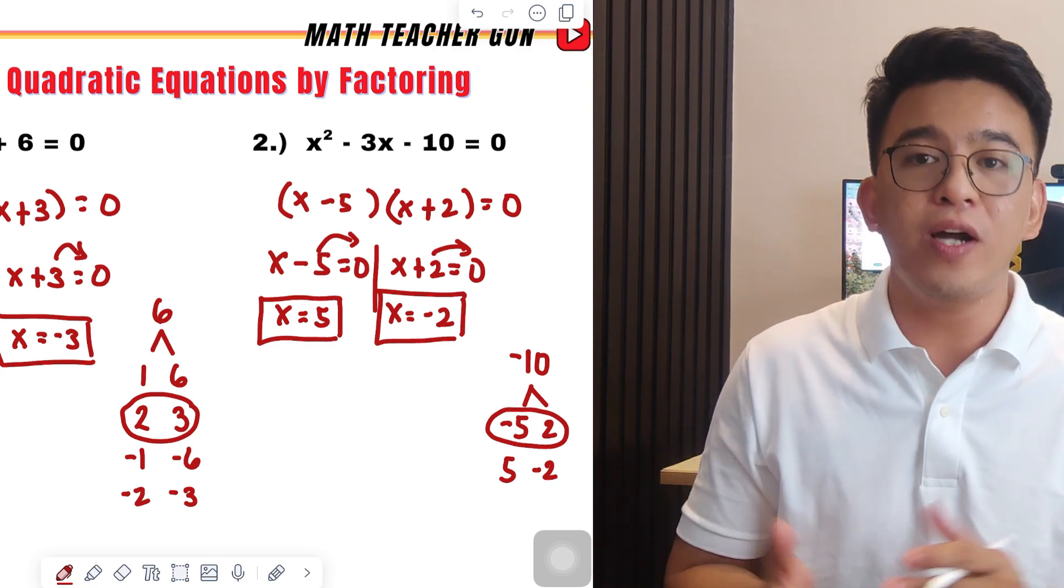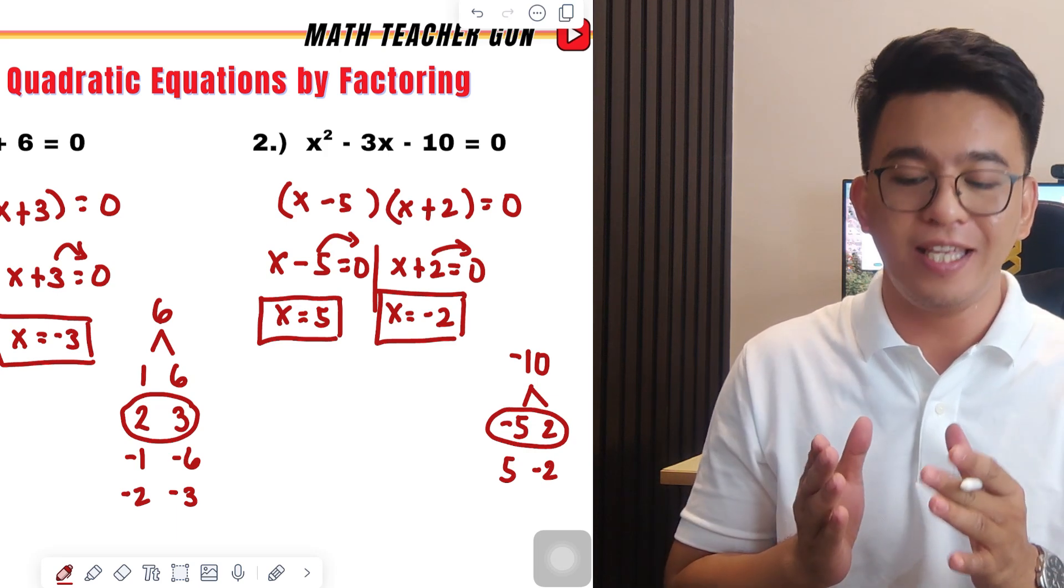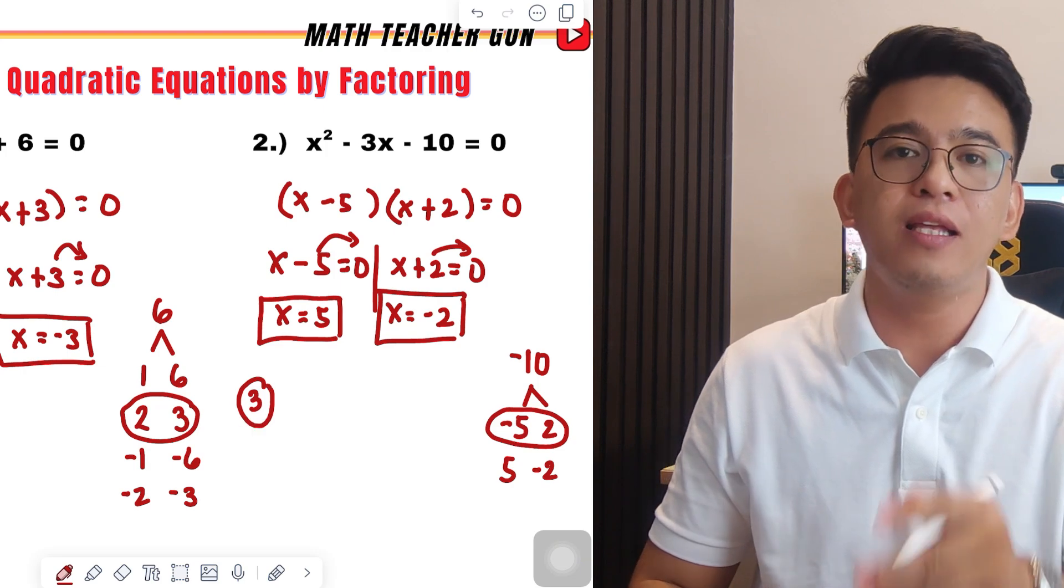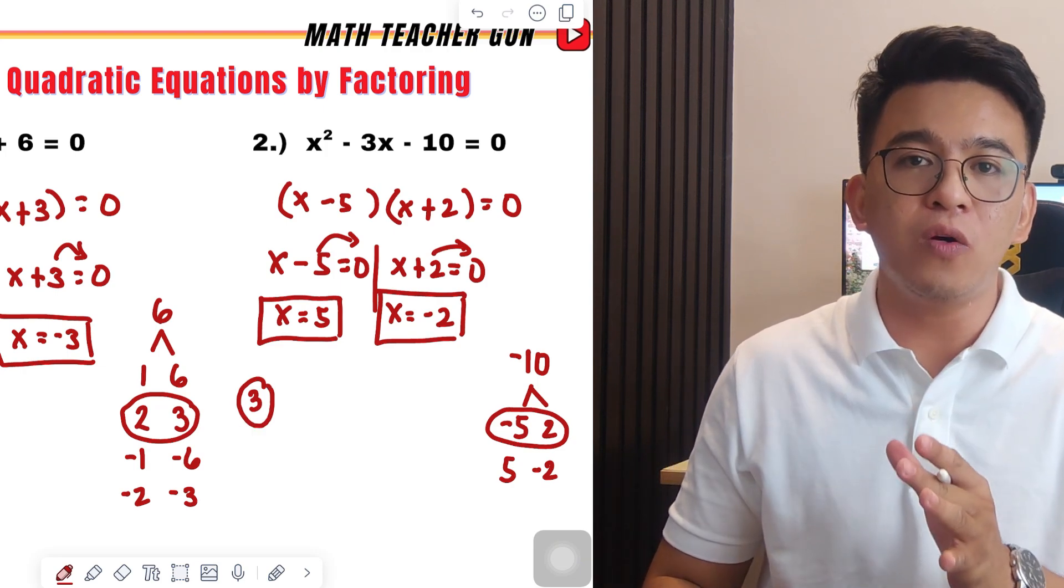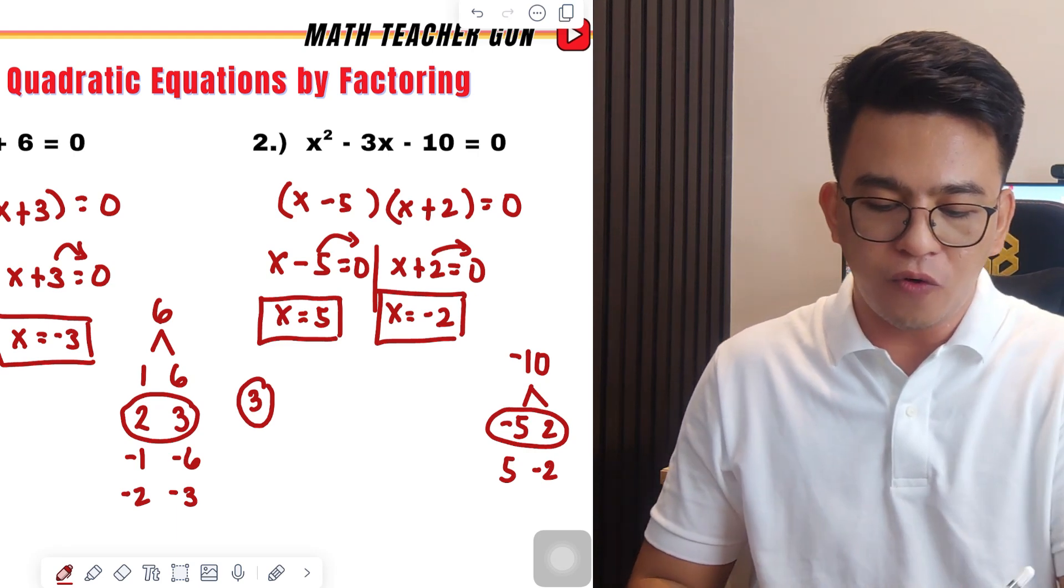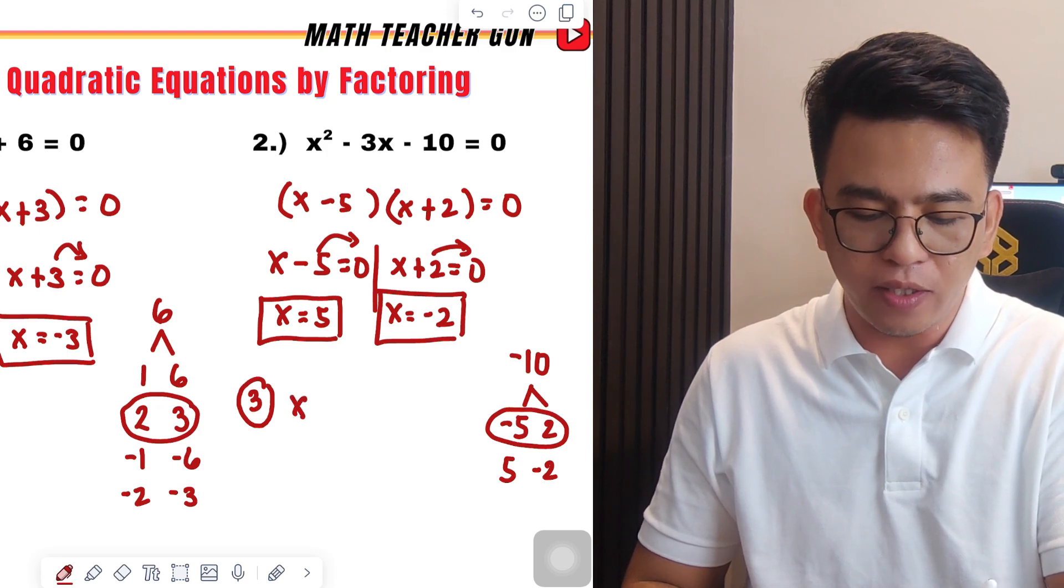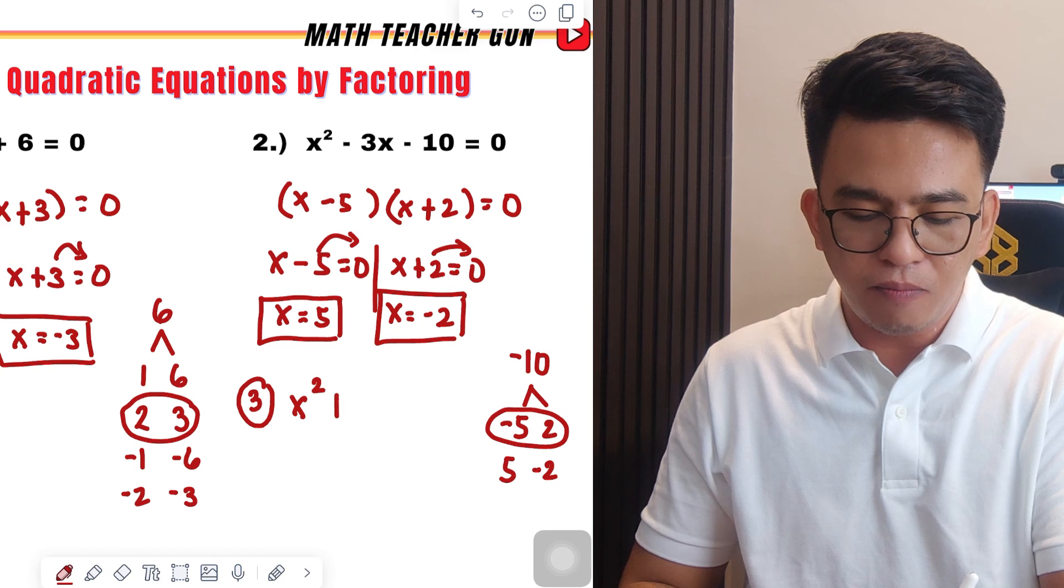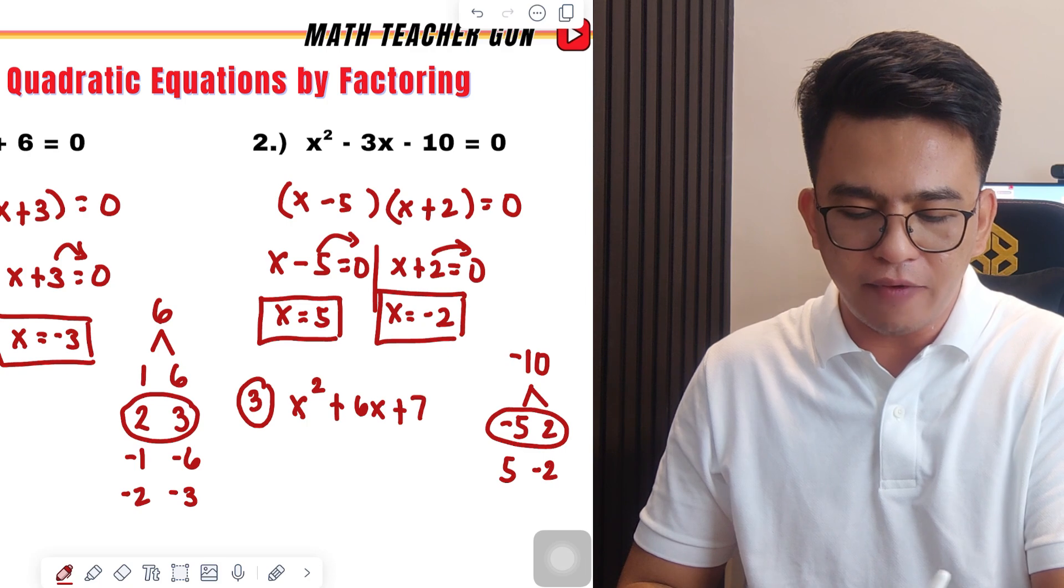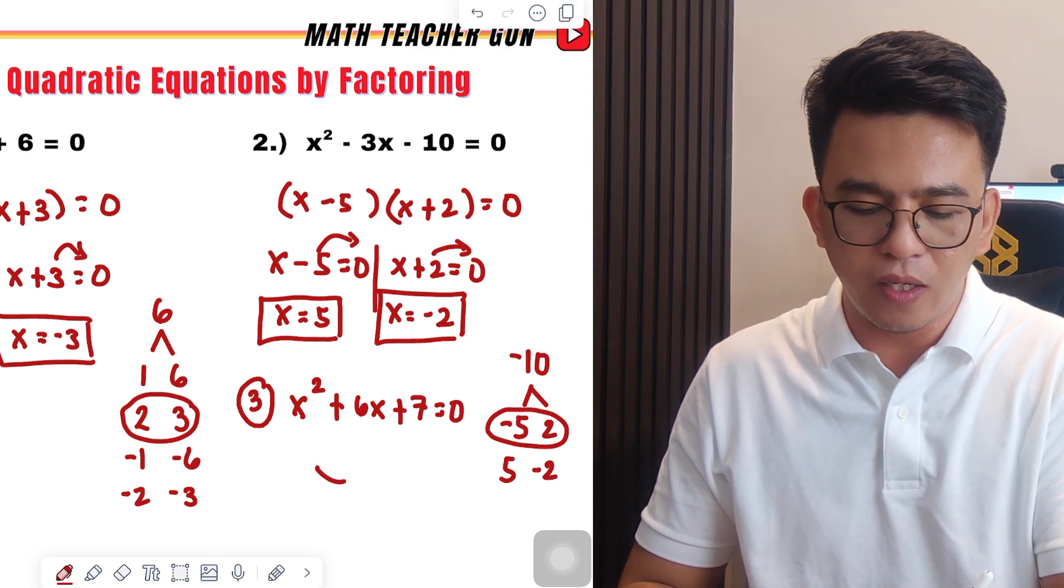So, I hope you got our lesson today. And as part of our routine, I will give you example number 3. And I want you to comment down below what are the values of x or the solutions of x for the quadratic equation x squared plus 6x plus 7 is equal to 0. So, I hope, guys, you learned something from this video on how to factor or solve quadratic equations by factoring.